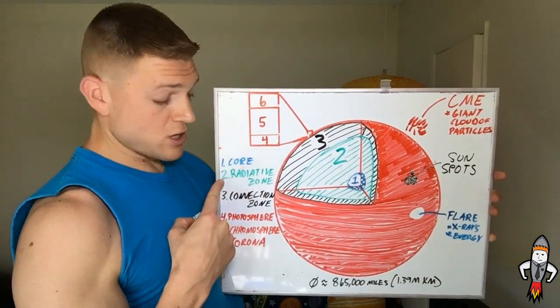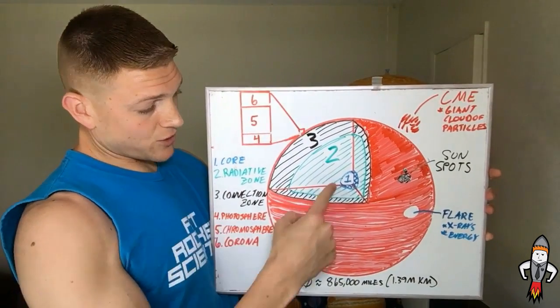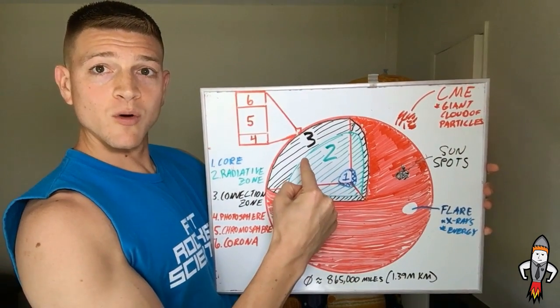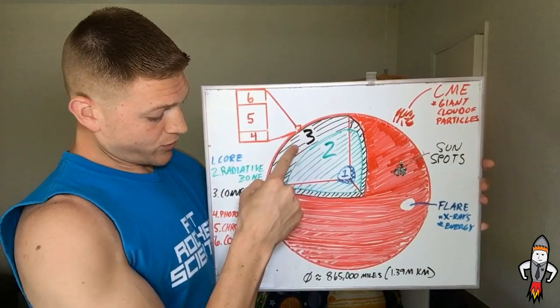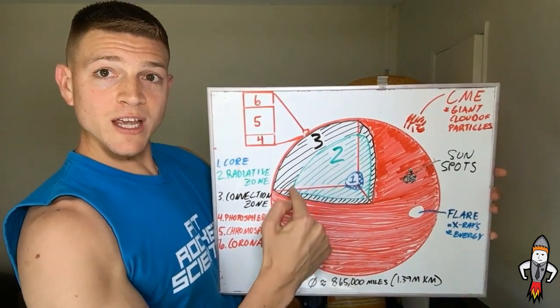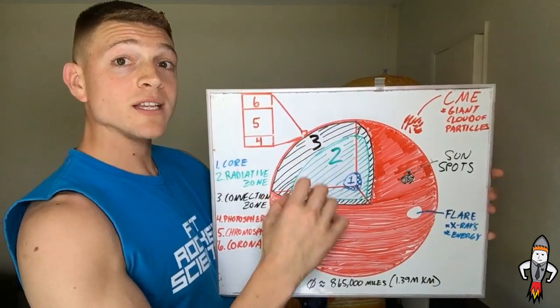Now number two, number two is the irradiated zone. It covers a large portion of the outside of the core moving towards the outside. And then number three is the convection zone. It is the outermost layer of the inner layers of the Sun, but not quite to the surface yet.